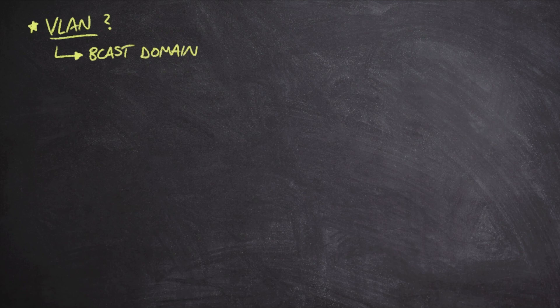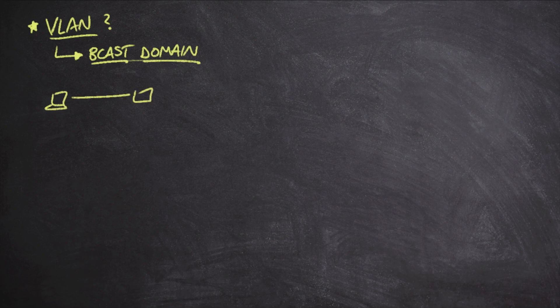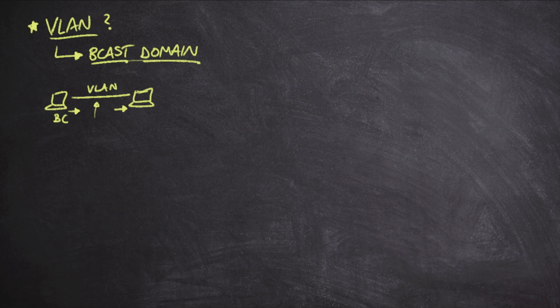We might remember early on in our CCNA, maybe CCNP study days, where we learned the difference between collision and broadcast domains. A broadcast domain simply indicates that this is the domain for all of our broadcast messaging. Basically, if two hosts exist inside of the same VLAN, it doesn't matter how many switches are in here, how many hubs, or how many ethernet cables — if they're on the same VLAN and a broadcast message gets sent out by one host, it will be received by the other, even if it has to traverse dozens of switches.